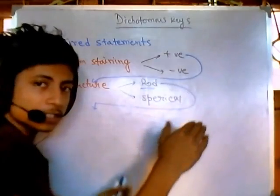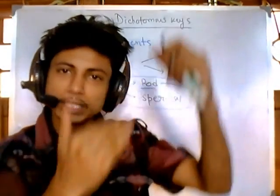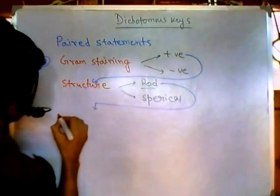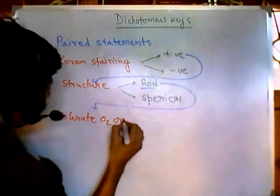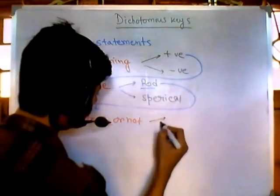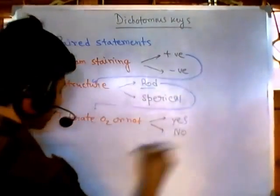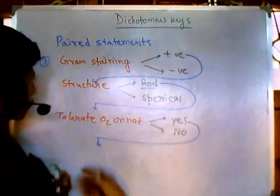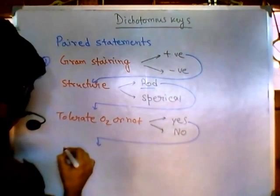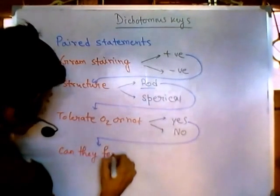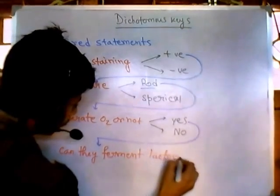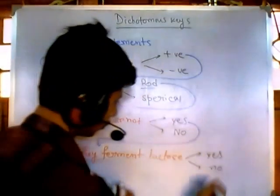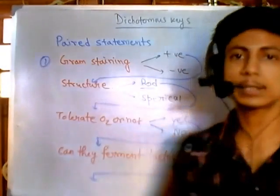The outcome of one test helps us go to the next round of the dichotomous key. For example, we test whether they tolerate O2 or not — yes or no. If the answer is yes, we take that and proceed to another chemical reaction. Then, for example, we ask: can they ferment lactose? Again two possibilities: yes or no. If the answer is no, we take that result and proceed to the next test. This is the way it builds.